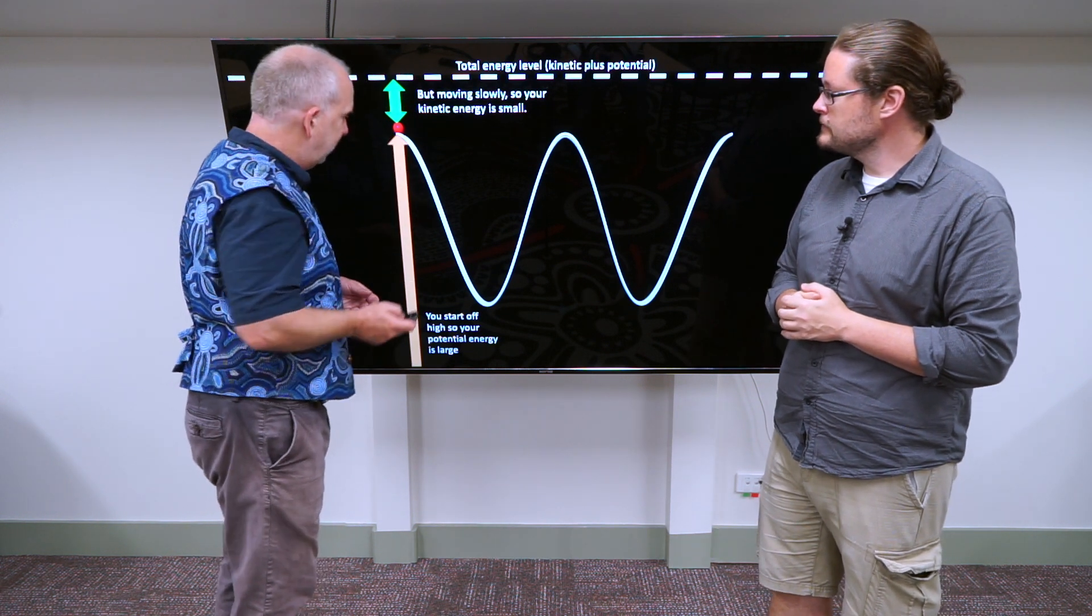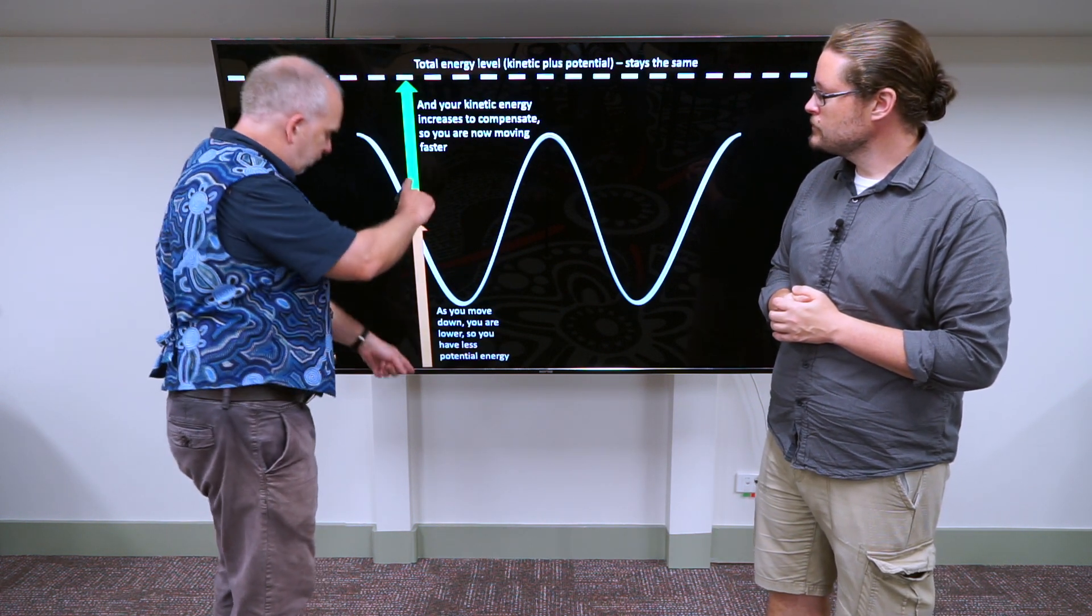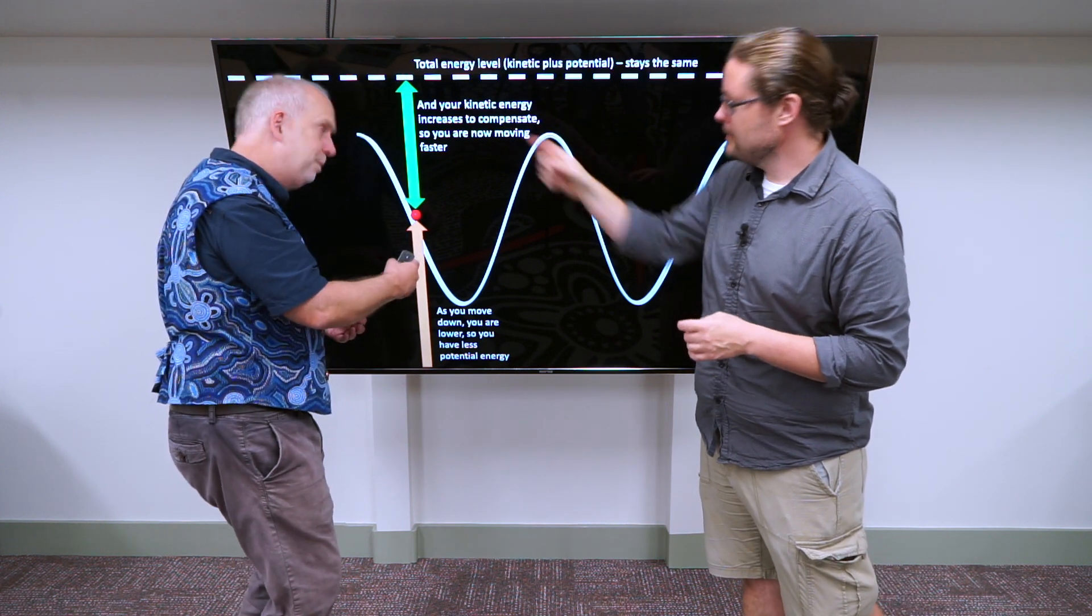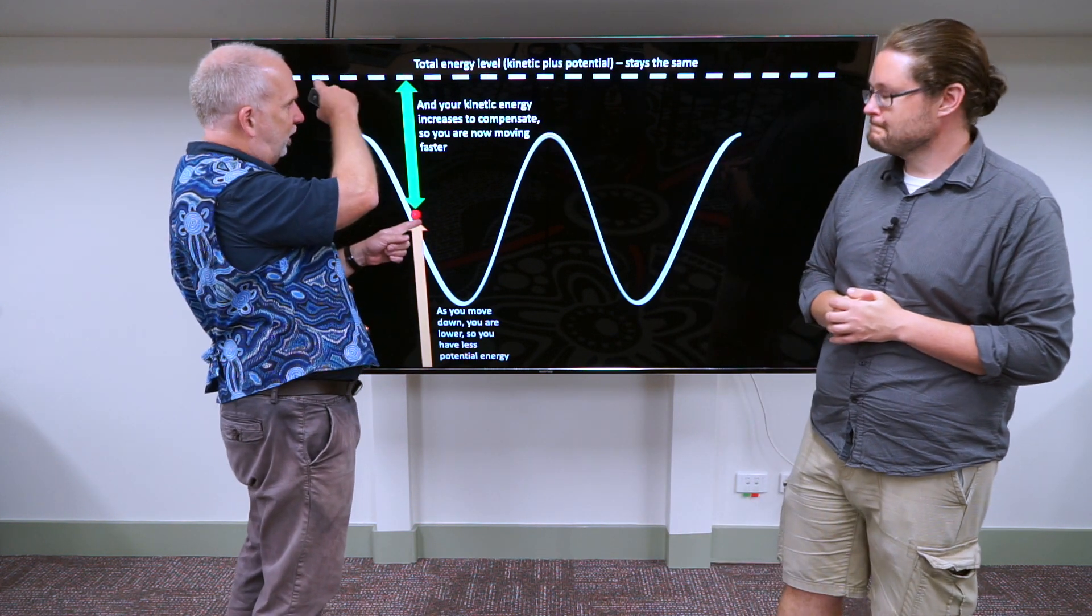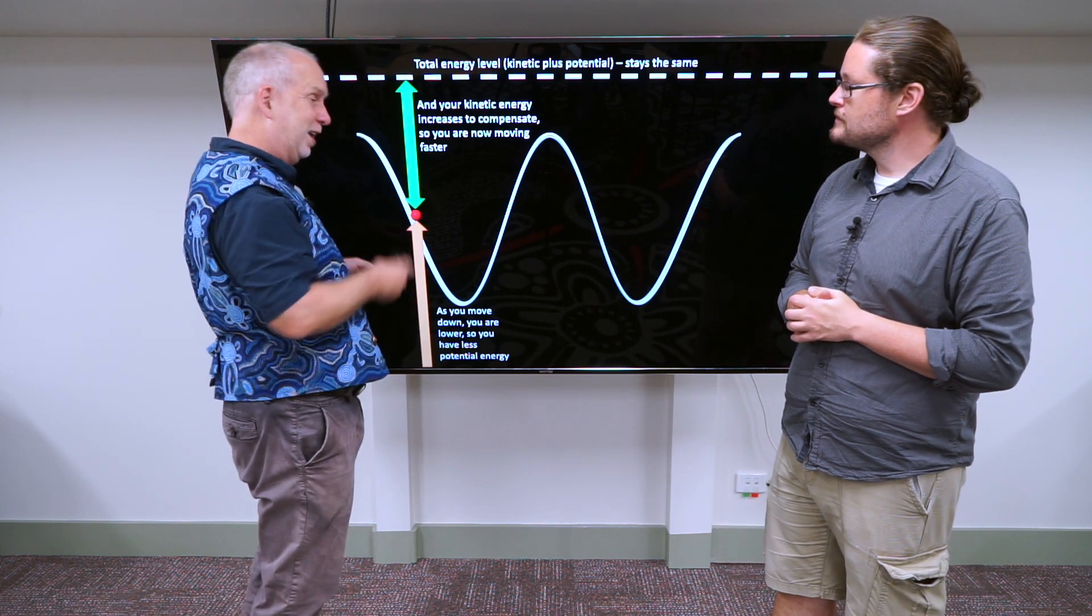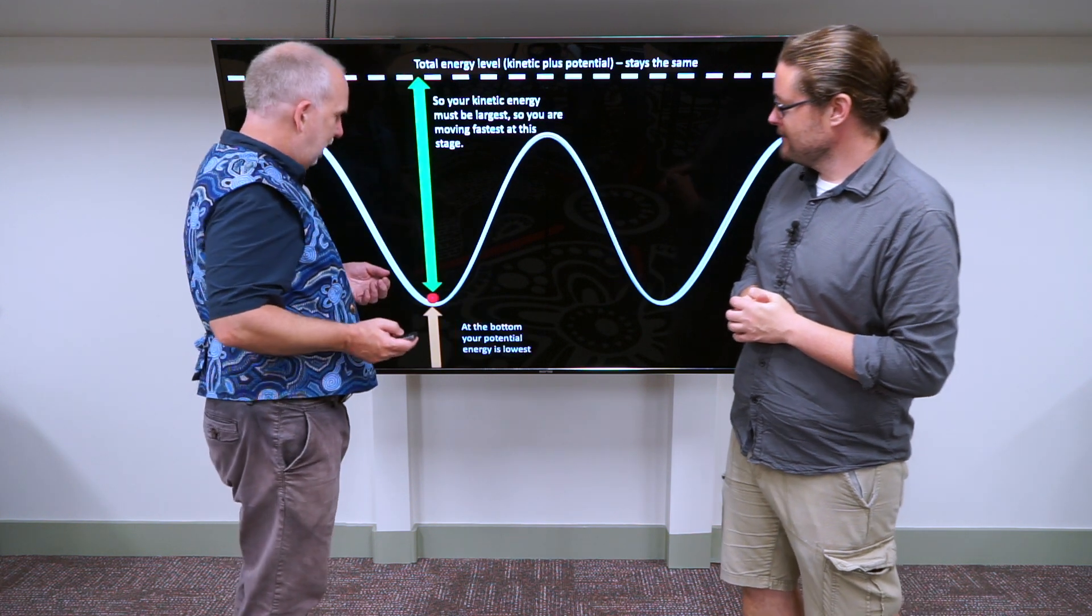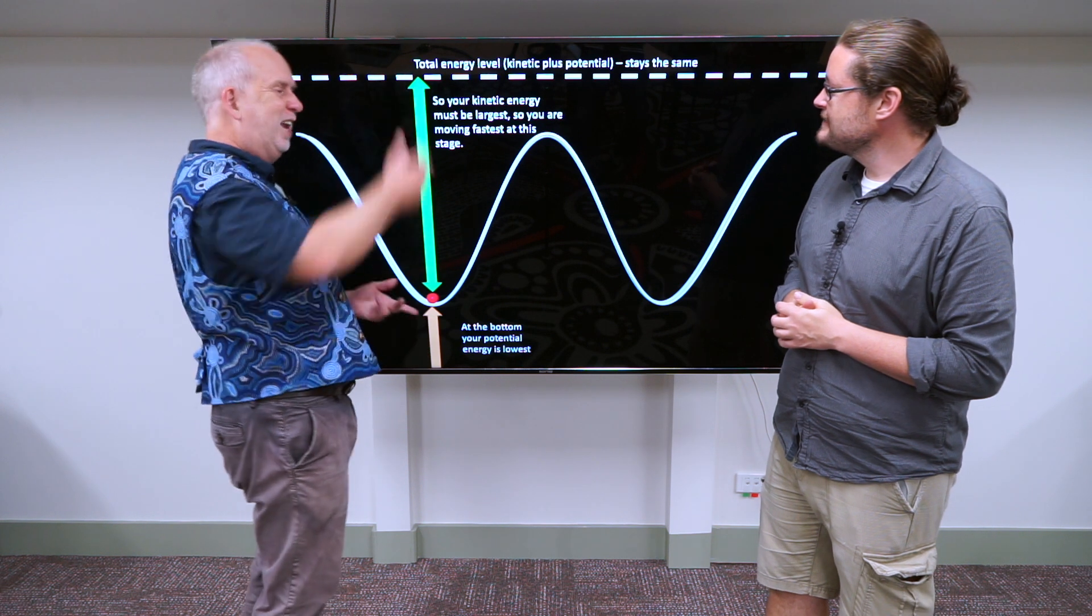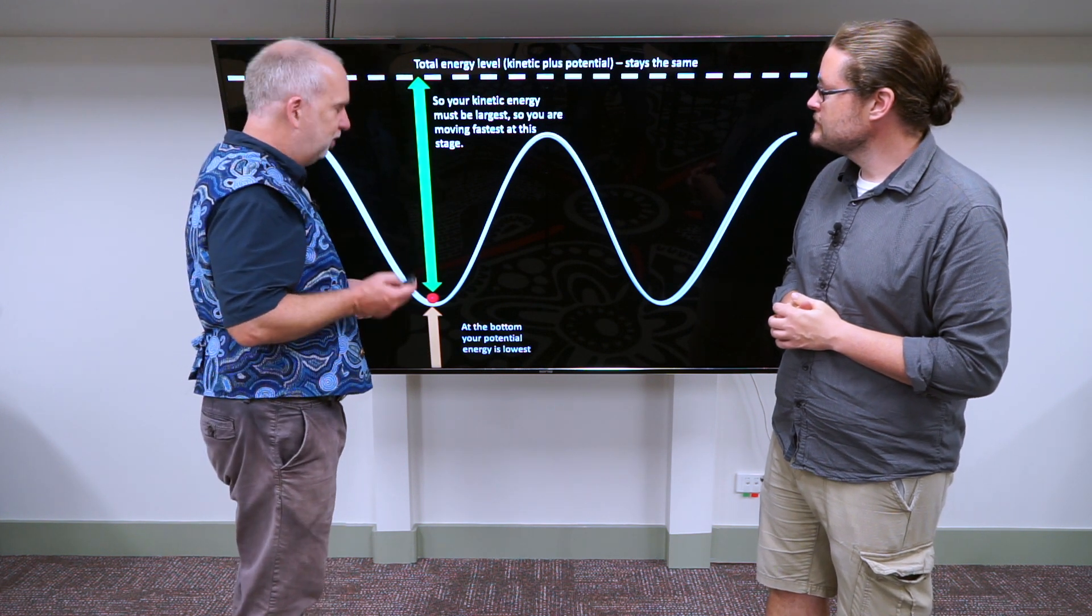And as it slides down, now the potential energy is less because you're lower down. But your total energy remains the same because it always remains the same, law of conservation of energy. And so you've now got more kinetic energy, so you're going faster. At the bottom, only a small bit of potential energy, lots of kinetic energy. So that means you're going pretty fast.